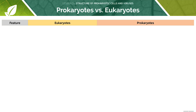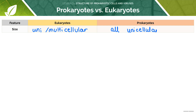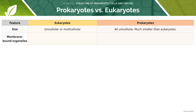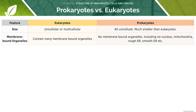Let's fill in this table to recap the differences between prokaryotes and eukaryotes. Looking at size: eukaryotes are unicellular or multicellular, whilst prokaryotes are all unicellular. For membrane-bound organelles: eukaryotes will have many, whilst prokaryotes will have none. Considering the nucleus: in eukaryotes it is membrane-bound, whilst in prokaryotes there is no nucleus — it is just a free-floating chromosome.